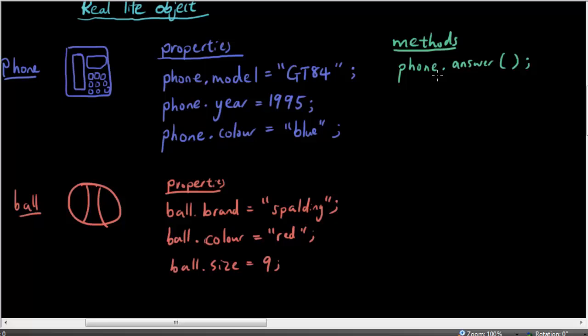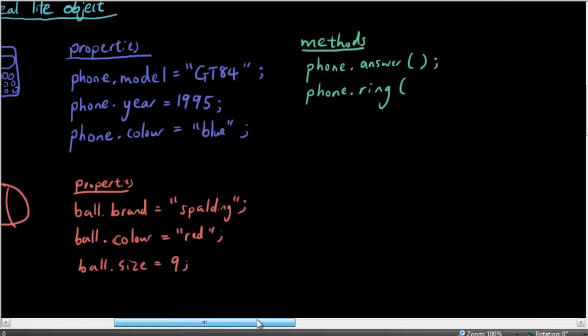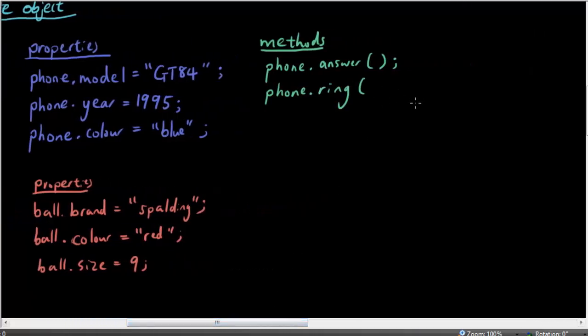And if you type this into JavaScript, it will answer the phone, or something like that. Now what's another method? Well, you could use your phone to ring someone. Now when you ring someone, the method is going to have some input arguments. And it's going to have the phone number. So don't ring this because it's not a real number. And then it's going to ring them. So this is an input argument for the method. What else could you do with a phone? Well, nothing if it's this old.